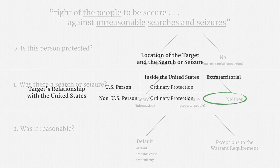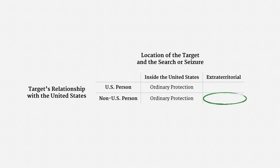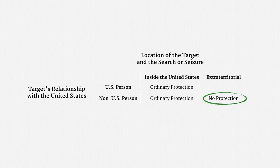Let's go back to our two-by-two grid, since we now have an answer for non-U.S. persons who are outside the United States and are the target of a search or seizure outside the United States. In those cases, there generally isn't a substantial connection to the United States, so there's no Fourth Amendment protection. If you're a foreigner outside the United States and an American officer does something to you outside the United States, then you cannot invoke the Fourth Amendment.